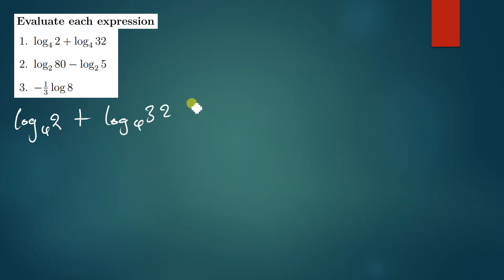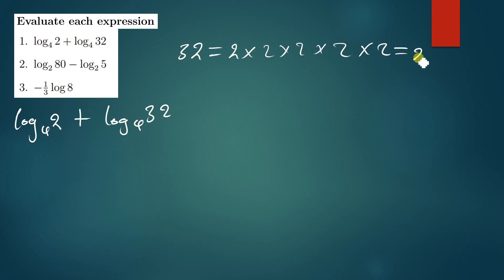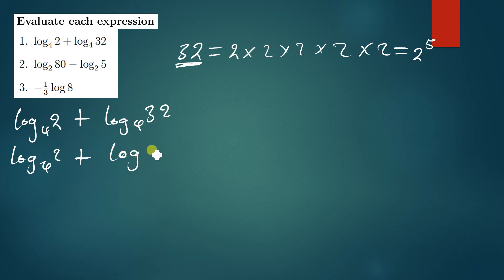We can rewrite 32 in terms of 2: 2×2×2×2×2 = 32, so 2 to the power 5 gives us 32. So we can write the expression as log 2 base 4, plus log(2 to the power 5) base 4.